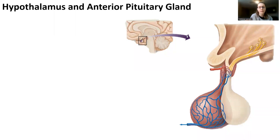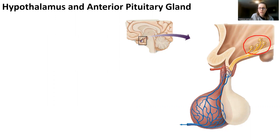The next part is we're going to look at the hypothalamus and anterior pituitary gland relationship. We saw that the hypothalamus makes some hormones that get secreted out of the posterior pituitary gland. But there are also some neurosecretory cells that are going to help make hormones that actually get secreted directly into the bloodstream.